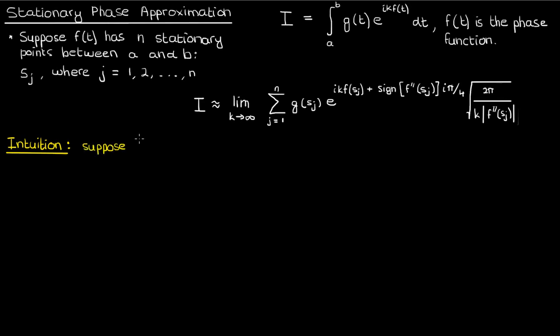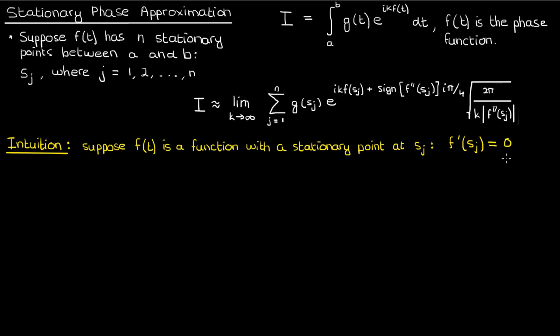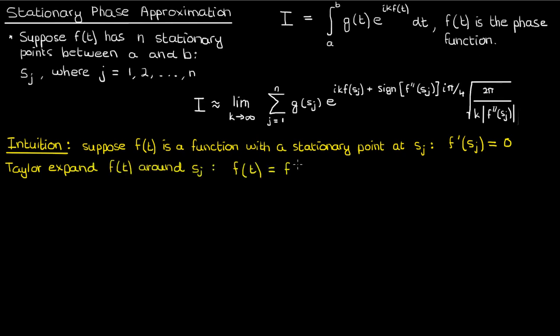Suppose I have a function f with a single stationary point at s_j. So at s_j the derivative of f is 0 — the function is not changing, it's stationary. Let's examine the behavior of f in the neighborhood of s_j, and to do that we'll perform a Taylor expansion of f around s_j, continuing the expansion until the quadratic term. Since s_j is a stationary point, the first derivative of f at s_j is 0, so we'll cancel the first derivative term.